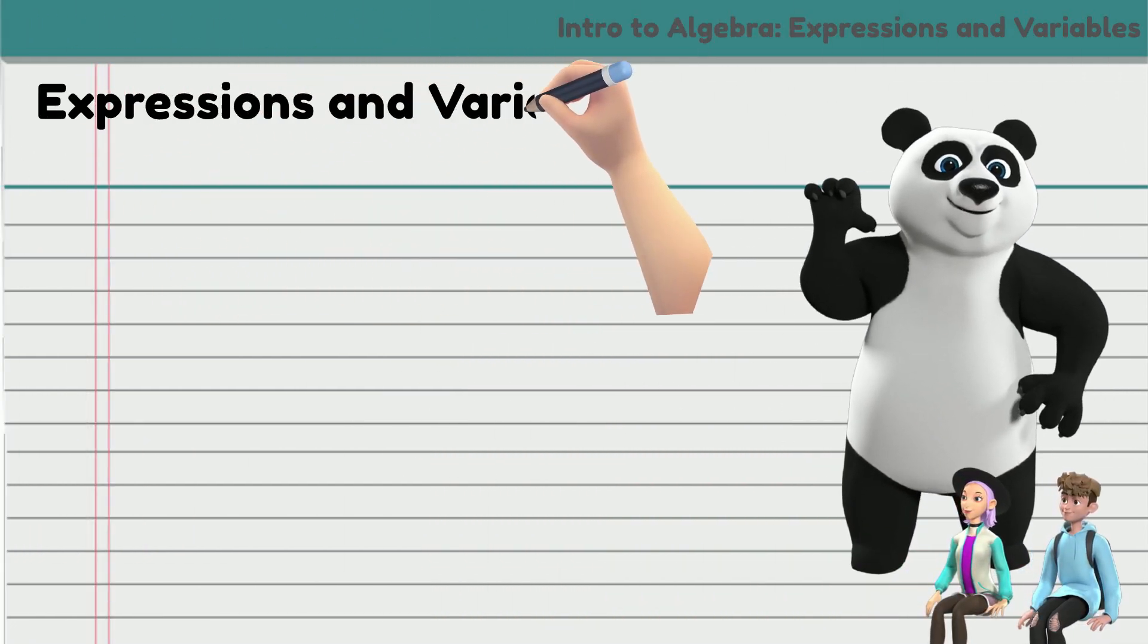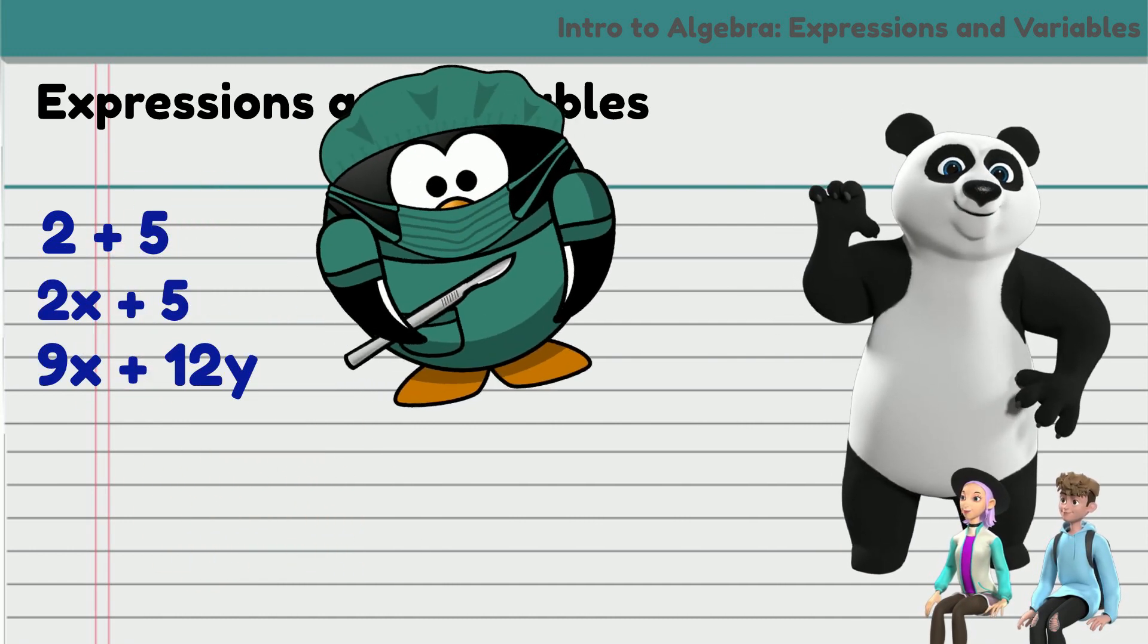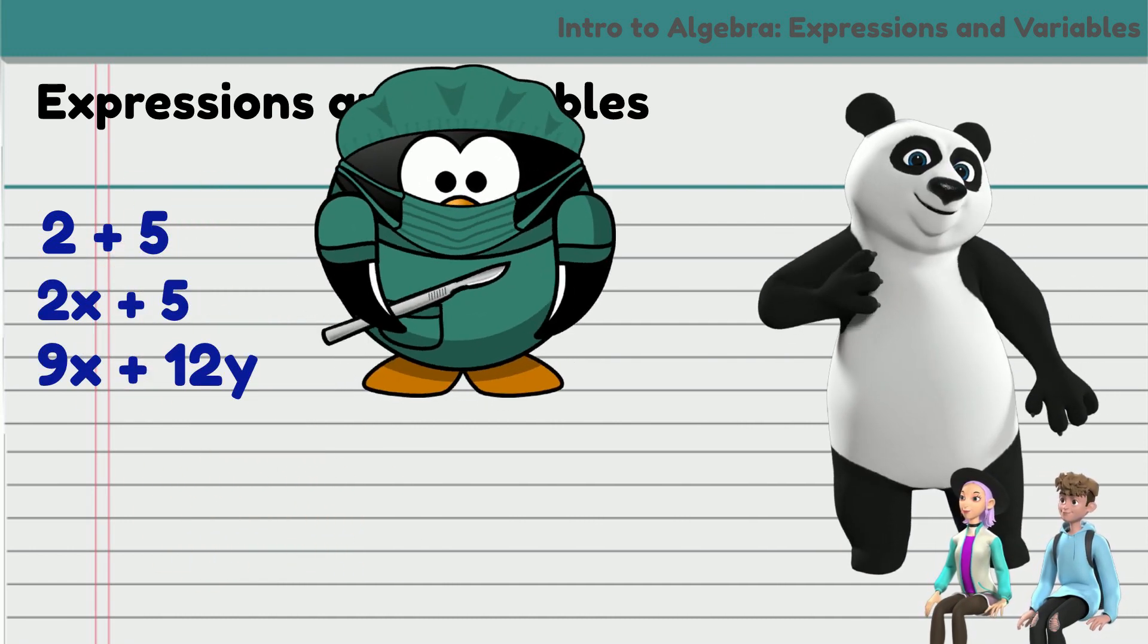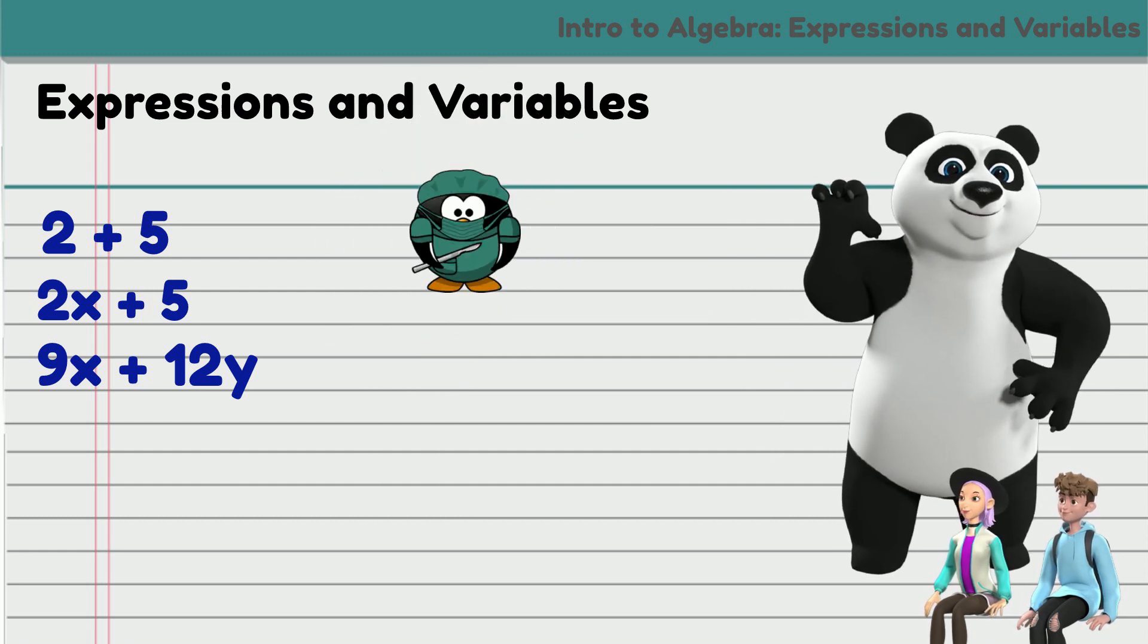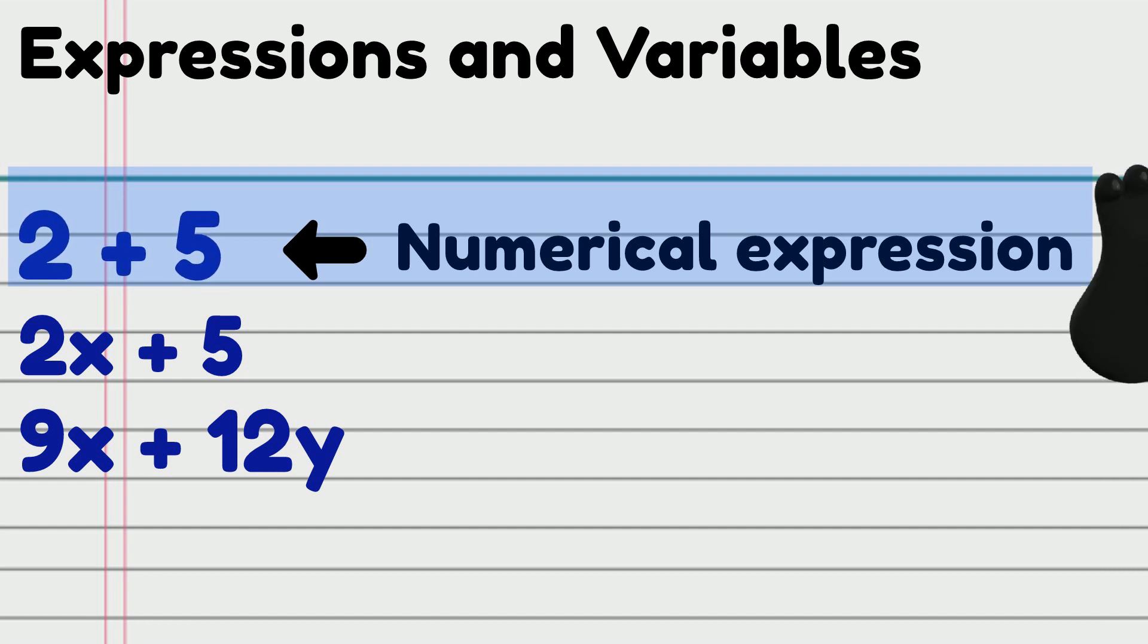An expression in mathematics is like a phrase or sentence that describes the operations that need to be performed on the numbers and or variables within the expression. A numerical expression consists of numbers and operations. It does not contain any unknown variable, equality, or inequality symbols. An example is 2 plus 5.